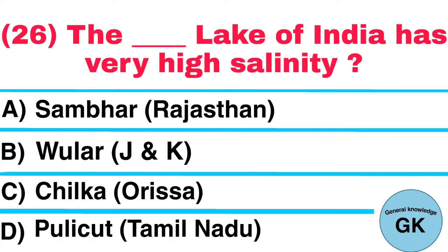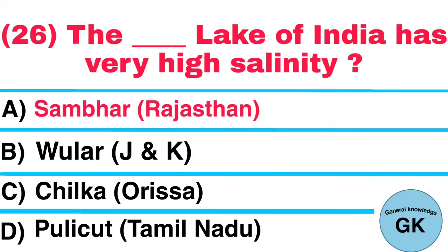Question number 26. The lake of India that has very high salinity: A. Sambhar, Rajasthan, B. Wular, J&K, C. Chilka, Orissa, D. Pulikat, Tamil Nadu. Answer: Sambhar, Rajasthan.